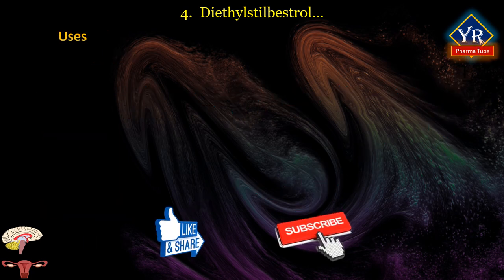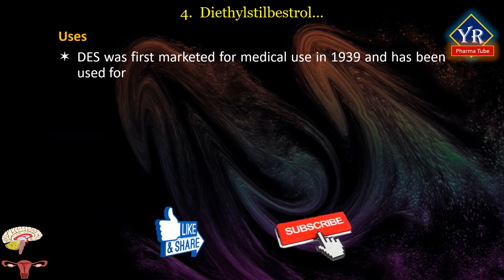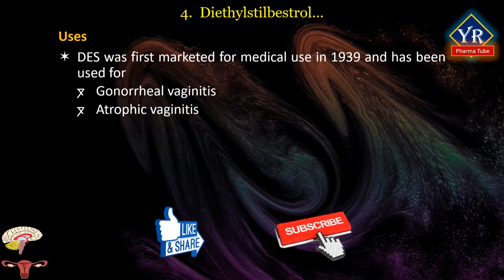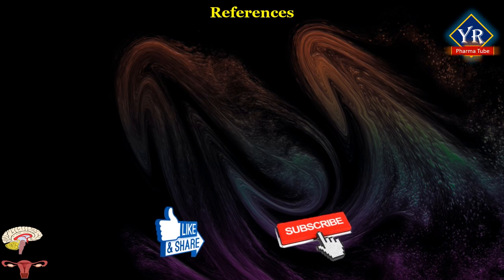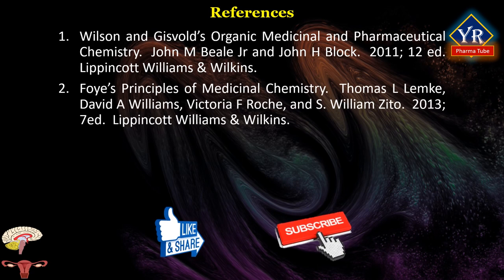Diethylstilbestrol was first marketed for medical use in 1939 and has been used for gonorrheal vaginitis, atrophic vaginitis, menopausal symptoms, and postpartum lactation suppression to prevent engorgement.